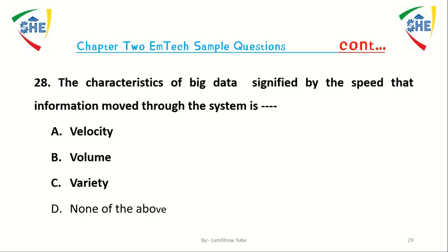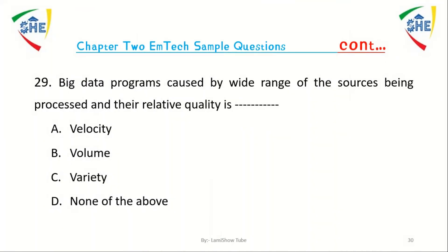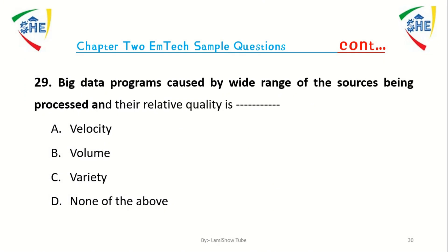Question number 28: The characteristic of big data signified by the speed that information moves through the system is dash. A) Velocity, B) Volume, C) Variety, D) None of the above.